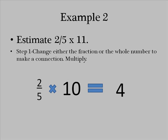I know 5 goes into 10 2 times. But since there's a 2 as the numerator, I'm going to double it. 2 times 2 equals 4. So 2 fifths times 11 is going to be pretty close to 4.